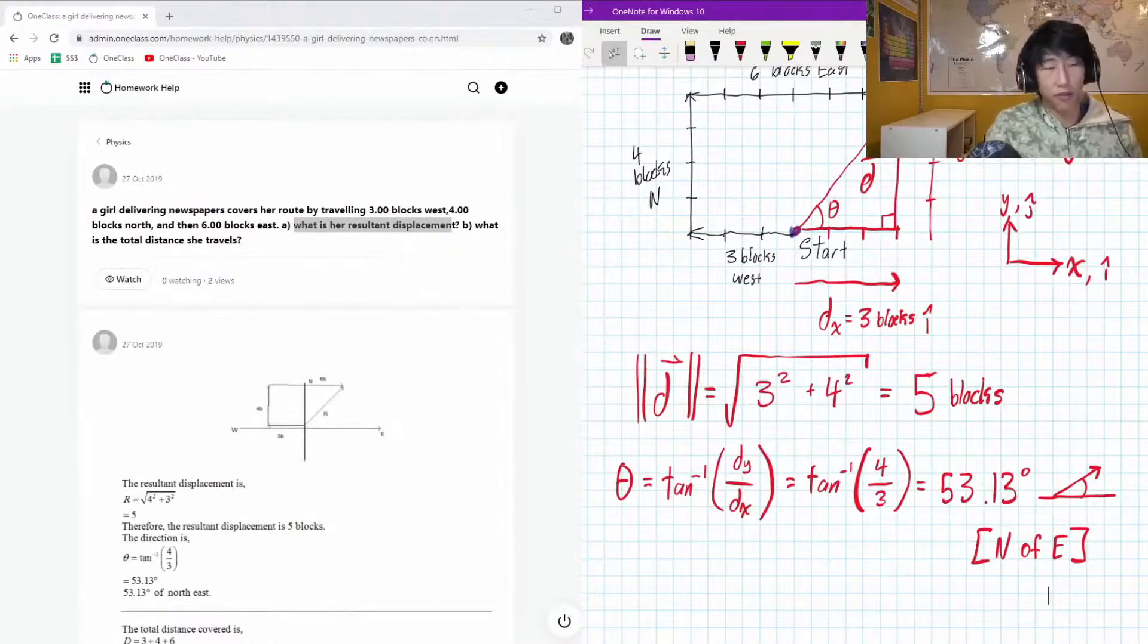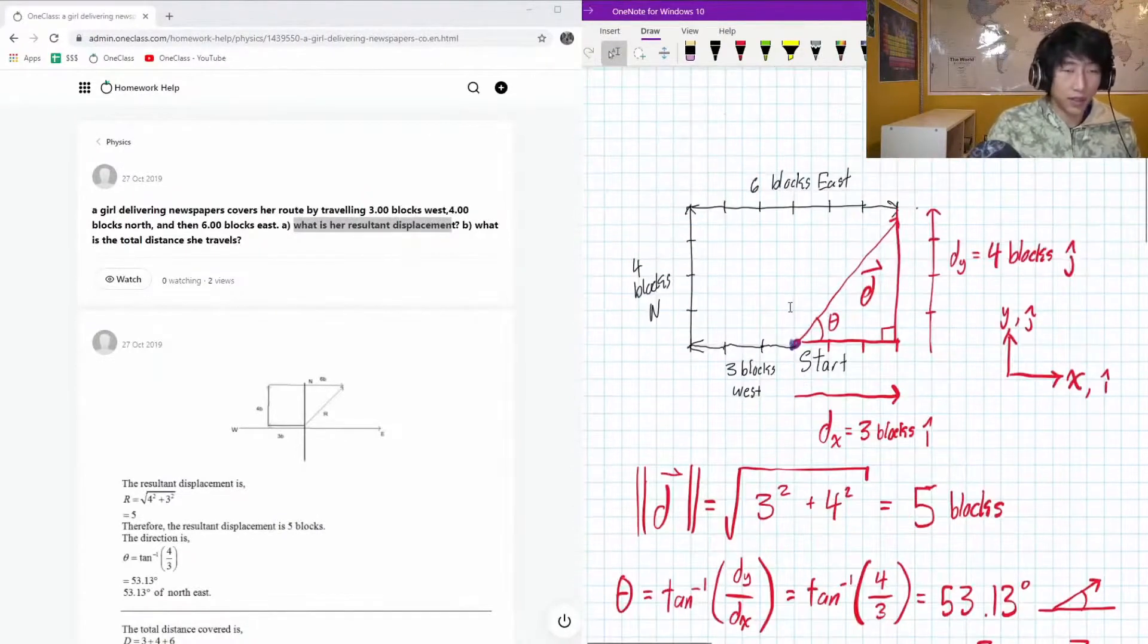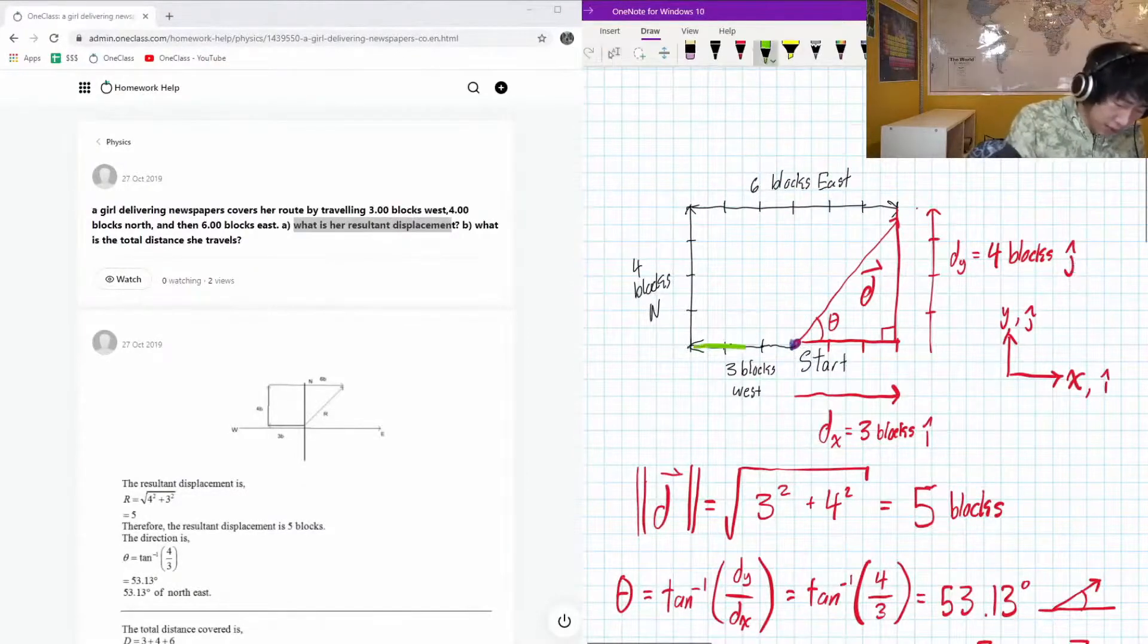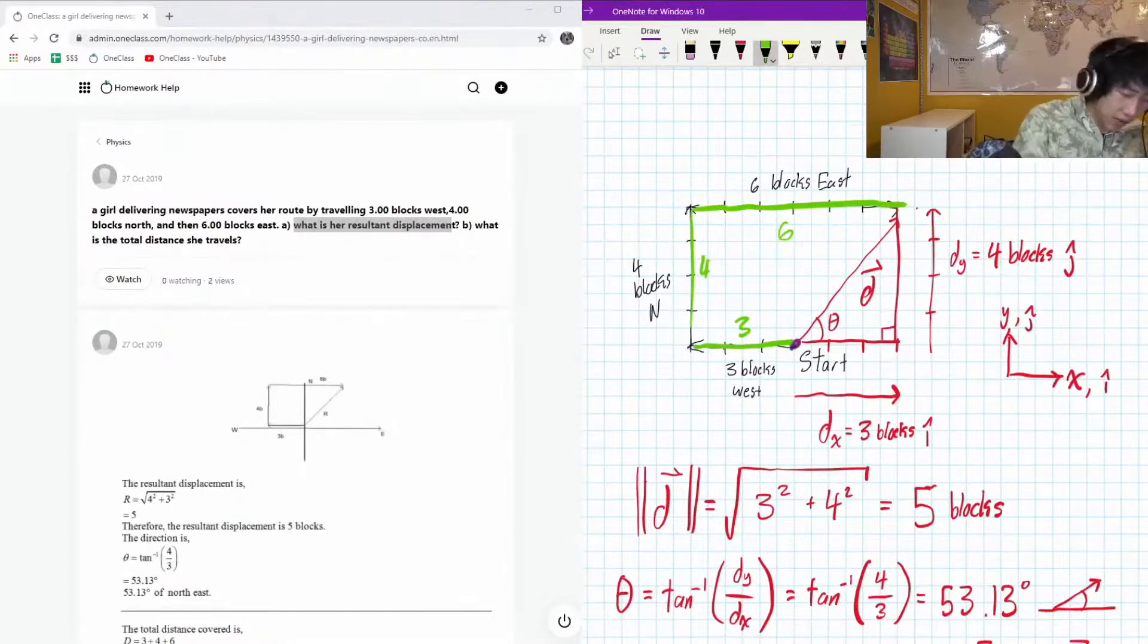Okay the second part of the question, much easier, is what is the total distance that she traveled? And this is going to be a lot easier. So we just have to look at every individual step of the journey, see how much distance was covered in that individual step, and then add them up. So our first step is 3, our second step is 4, and our third step is 6.